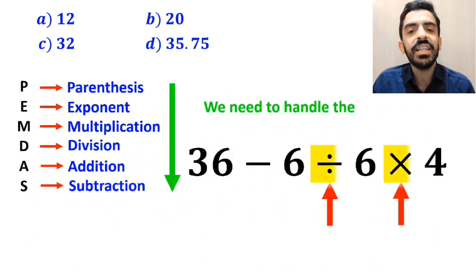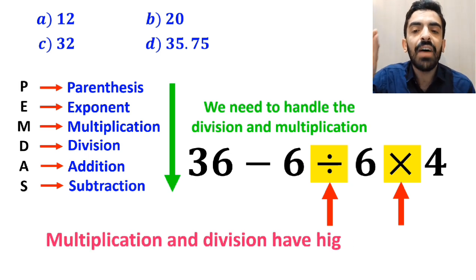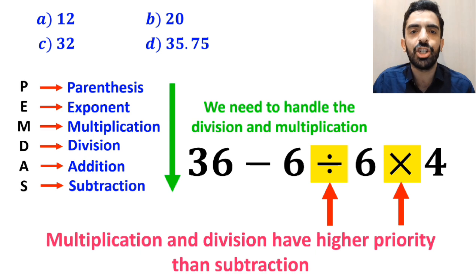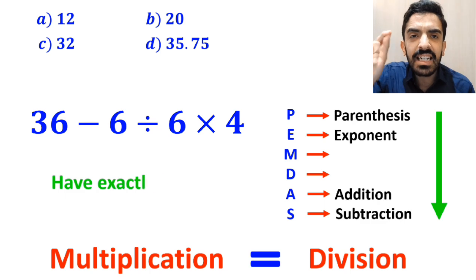The next step, we need to handle the division and multiplication since multiplication and division have higher priority than subtraction. However, it's very important to note that in the PEMDAS rule, multiplication and division have exactly the same level of priority.